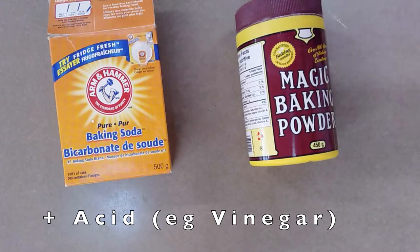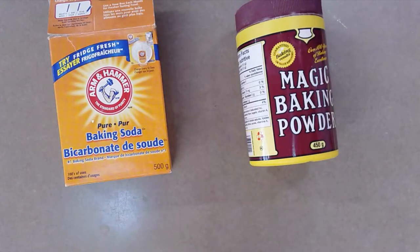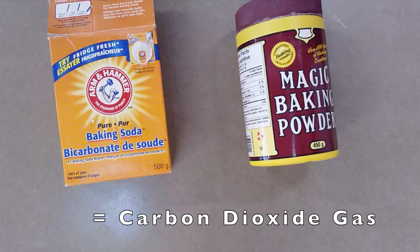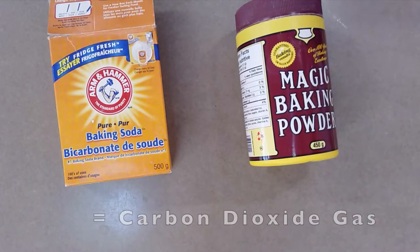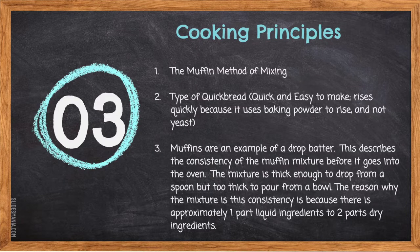Baking soda will act as a leavening agent when combined with an acidic substance such as buttermilk, sour cream, vinegar, or cream of tartar. When combined with one of these ingredients it will also produce carbon dioxide gas to help raise our flour mixture. Cooking principle number three: muffins are an example of a drop batter, which describes the consistency of a muffin mixture before it goes in the oven.